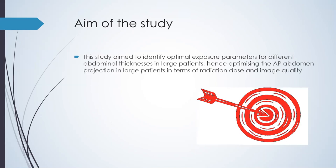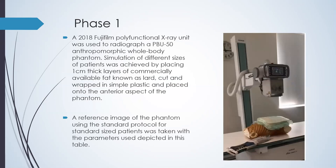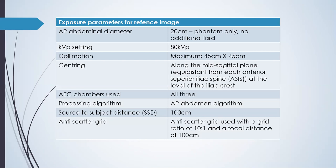The methodology was composed of two main phases. For phase one, a 2018 Fujifilm polyfunctional X-ray unit was used to radiograph a PBO50 anthropomorphic whole body phantom. The simulation of different patient sizes was achieved by placing one centimeter thick layers of commercially available fat, known as lard, cut and wrapped in plastic placed onto the anterior aspect of the phantom. A reference image was taken using the standard protocol for standard-sized patients: an AP abdominal diameter of 20 centimeters, 80 KVP, maximum collimation, centering along the mid-sagittal plane at the level of the iliac crest, all three AEC chambers used, the AP abdominal algorithm, an SID of 100 centimeters, and an anti-scatter grid.